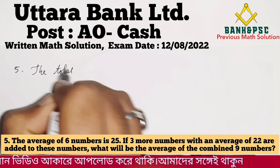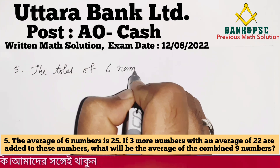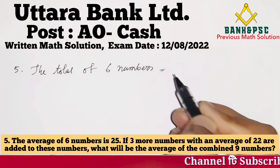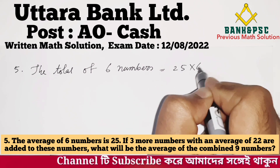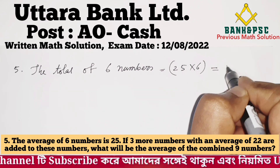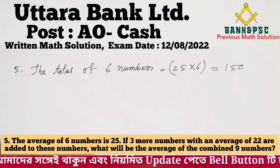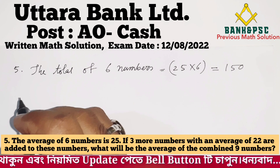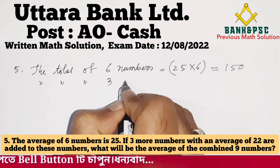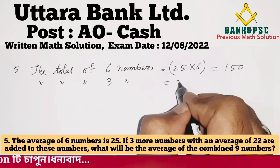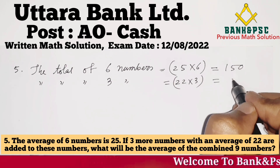The total of 6 numbers: 100 numbers average 25, so 25 x 6 = 150. The 3 numbers with sum 200: the total of 3 numbers is 22 x 3 = 66.